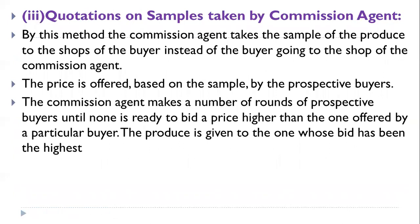The third method is quotations on sample taken by the commission agent. By this method, the commission agent takes a sample of the produce to the shop of the buyer, instead of the buyer going to the commission agent. The price is offered based on the sample by prospective buyers. The commission agent makes a number of rounds to prospective buyers until none is ready to bid higher than a particular buyer, and the produce is given to the highest bidder.